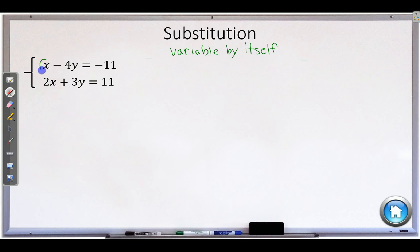I think the easiest one is right here. The x is almost by itself. All we have to do is take this negative 4y and move it to the other side, and we will have x by itself. So to do that, we're going to add 4y to both sides. And what we'll be left with is x is equal to,